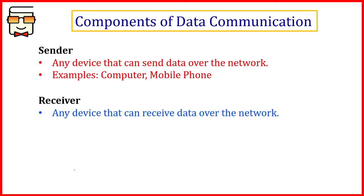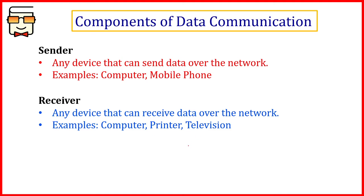Similarly, a receiver is also a device that can accept and receive the data or information from the network. This includes any kind of computer systems, televisions, and printers. For example, a television is a receiver because when we change channels using a remote, the remote is sending a signal to the television directing it to change the channel — so communication is happening there as well. Any kind of exchange, whether in the form of signals, light, or electromagnetic waves, counts under data communication.